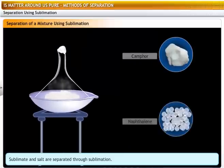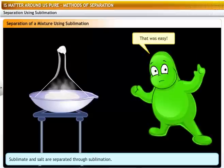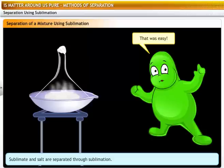Solids like camphor, naphthalene and anthracene are examples of solids that sublimate. That was easy.